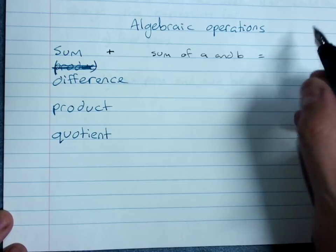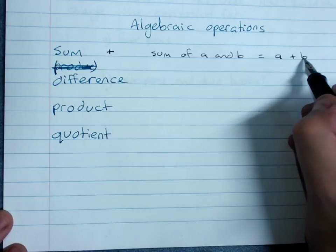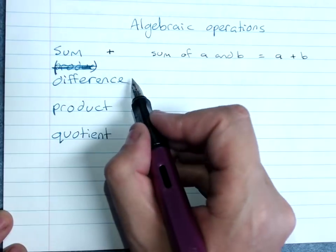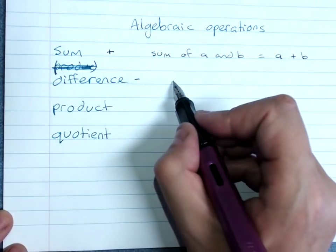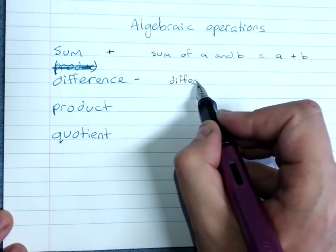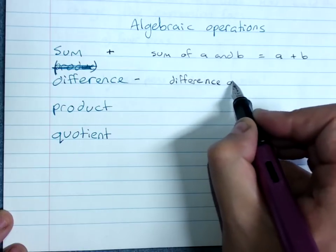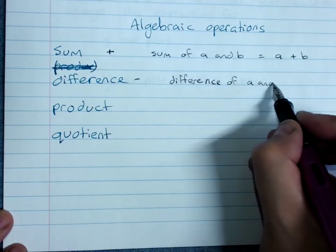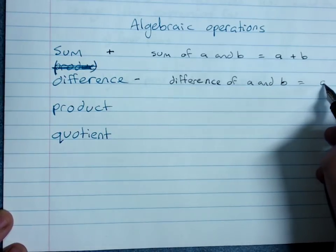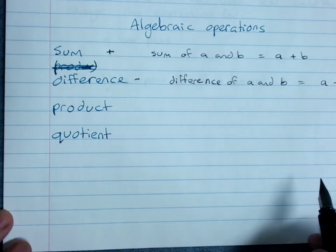The difference is minus. So the difference of a and b is a minus b.